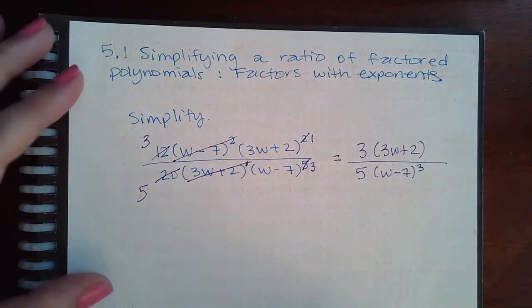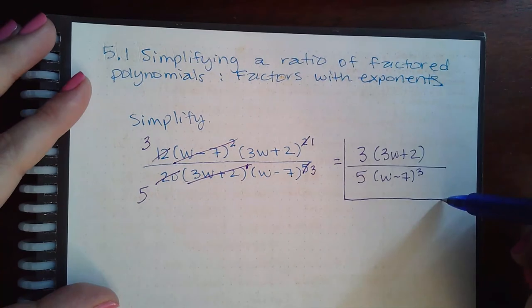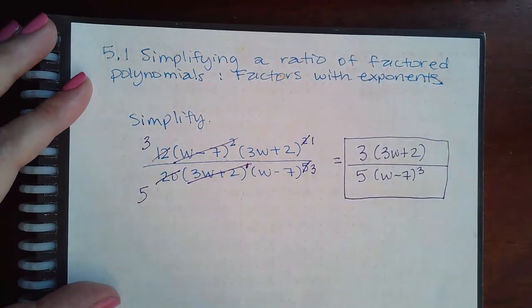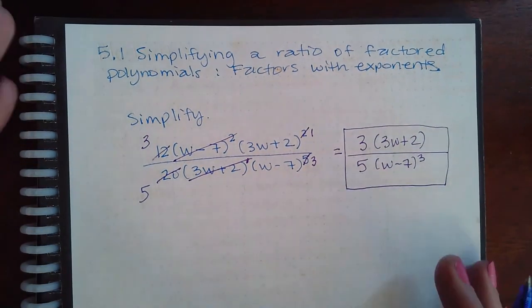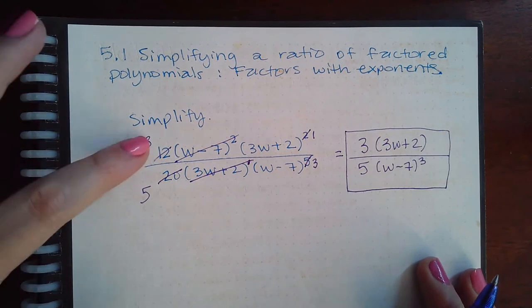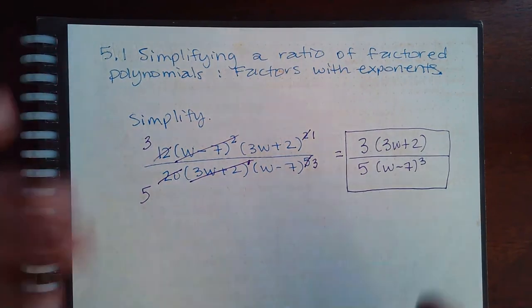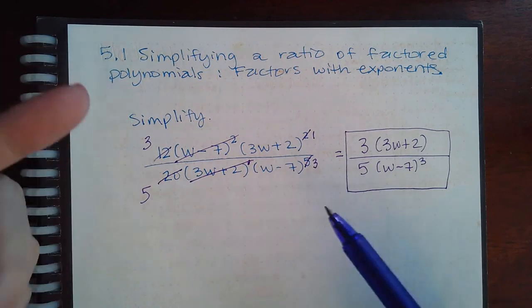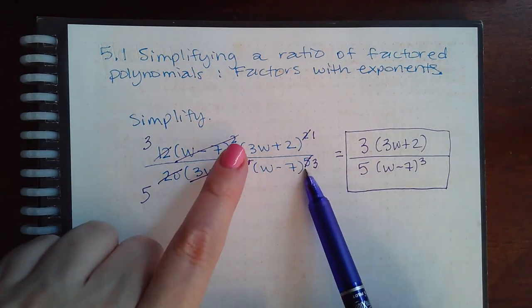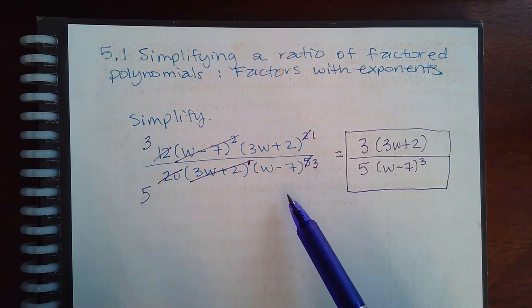And so this is the simplified answer to that problem. And so all of the problems you're going to work in this way. You're going to reduce the numbers just like you normally reduce a fraction, and then when you have common factors you're going to reduce them by the lowest exponent.